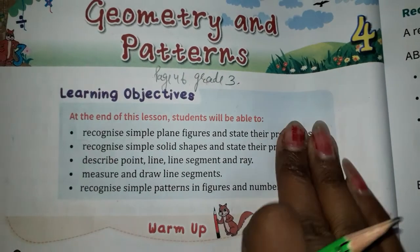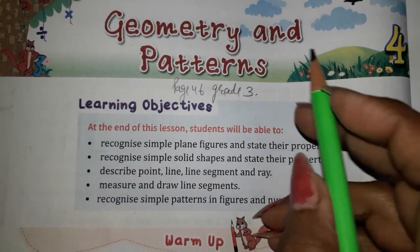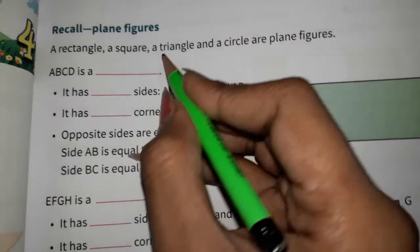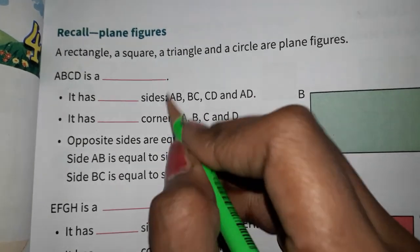Yes, bachye. Ab next dekho. Aaj hum start karne ja rahe hai mera chapter number four, Geometry and patterns. So abhi aap ne kya dekha tha? This is rectangle. So a, b, c, d. Ab aap ne yeh sari plane figure batani hai.